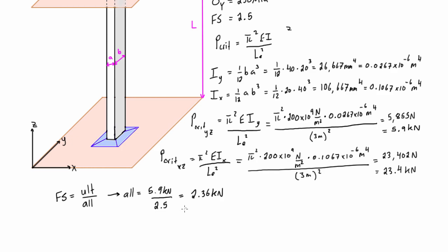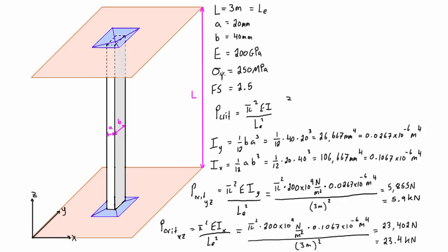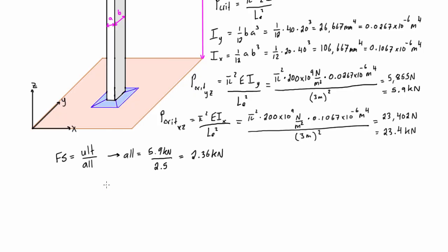It's possible the column buckles before it yields, or yields before it buckles. To check that this column won't yield before it buckles, the yield stress for this material is 250 MPa. Since stress = force / area, we can solve for the load that causes yielding.